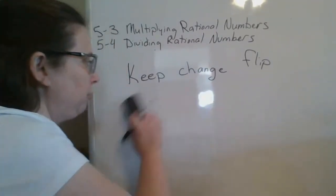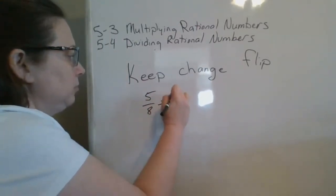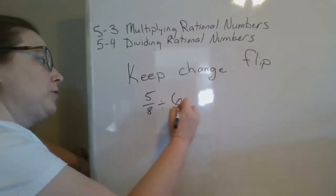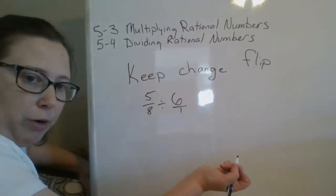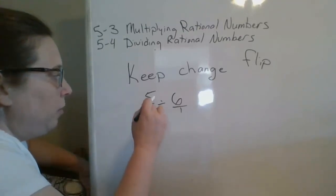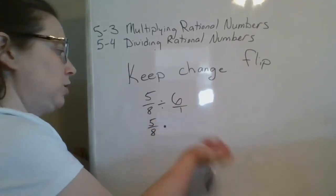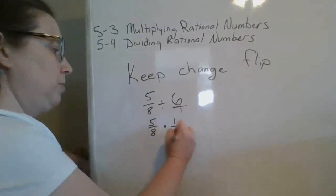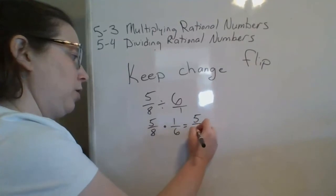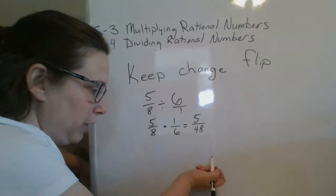Next, we have 5 eighths divided by 6. This time we have a whole number. Whenever you run into a whole number and you're working with fractions, you put that whole number over 1 — so 6 over 1 is the same as 6. Now I keep, change, flip: keep my first fraction, change to multiplication, flip my second fraction. I have no common factors, so I can't cross-reduce. I get 5 forty-eighths for my answer.